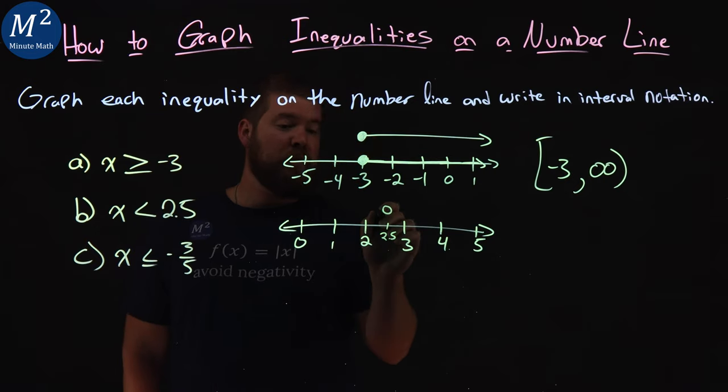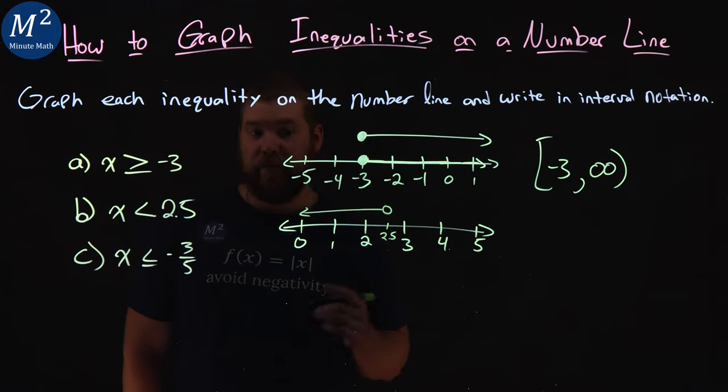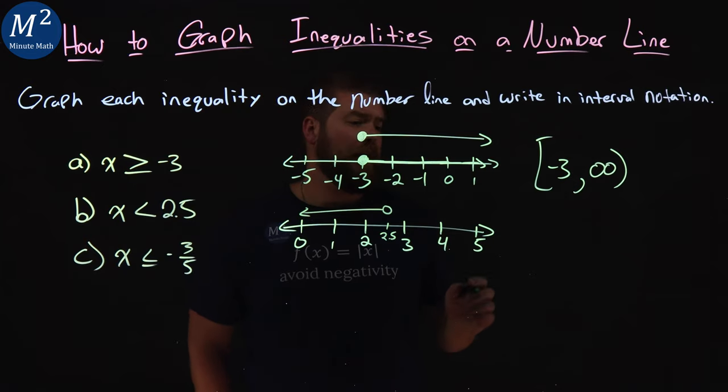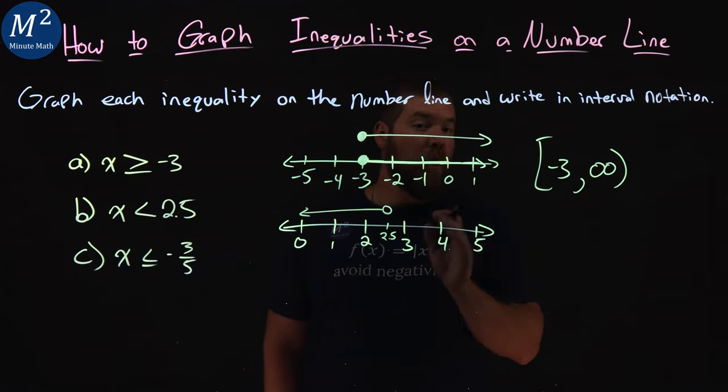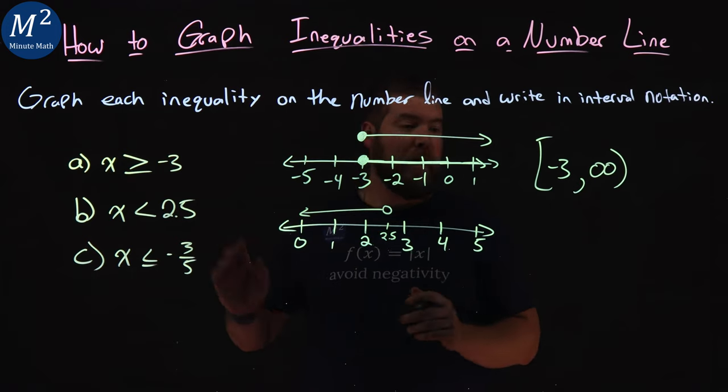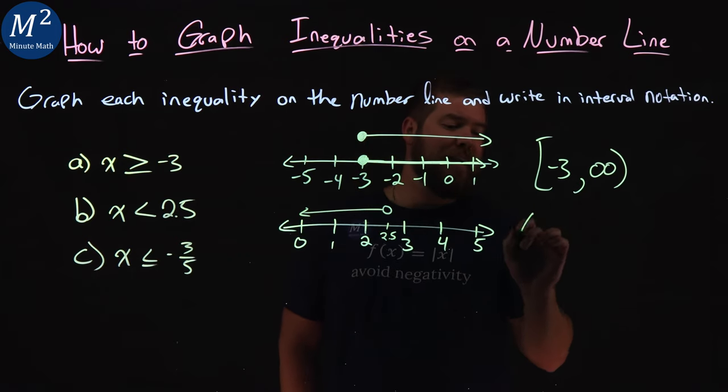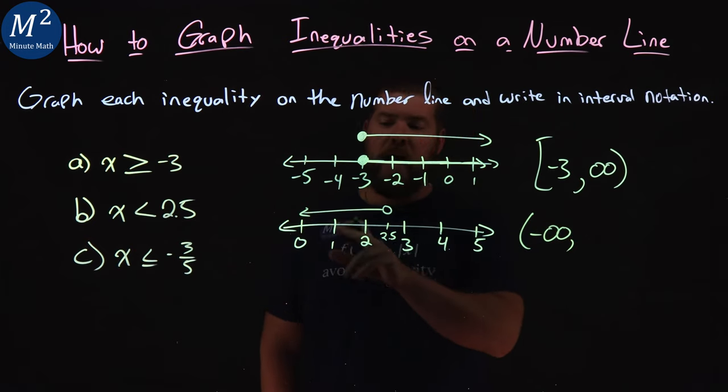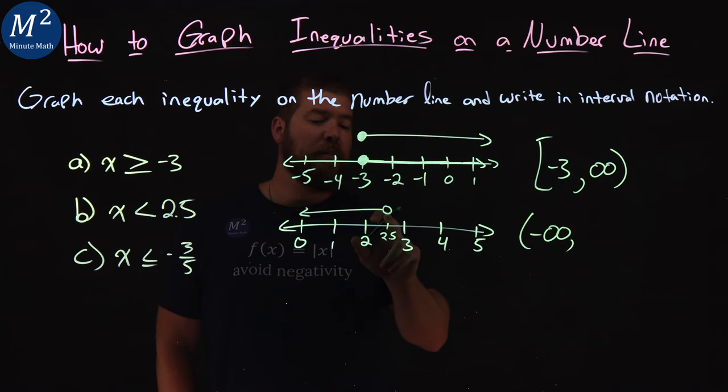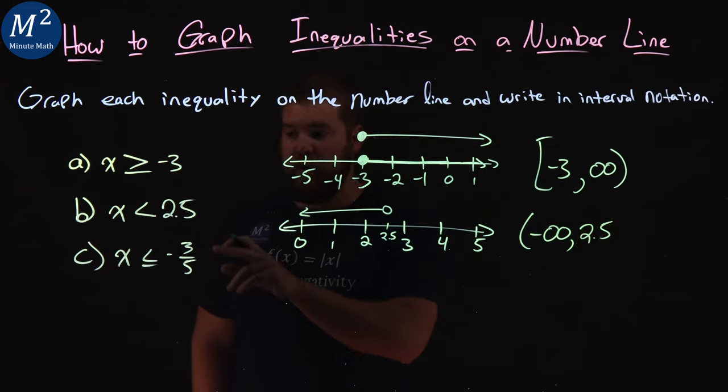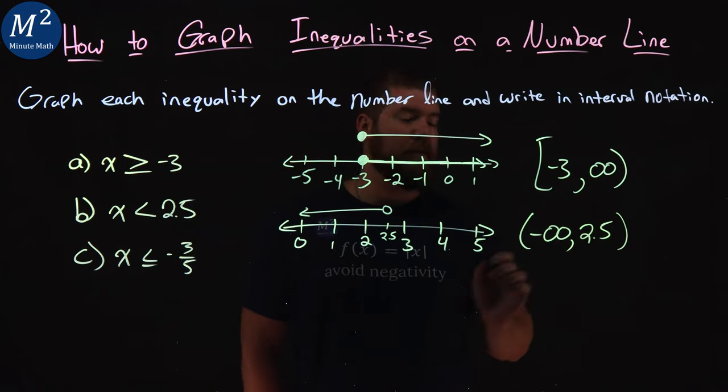Now x is less than, so the arrow goes to the left. So all the values are less than 2.5. So now to write this in interval notation, our lowest bound we're going is from negative infinity, the lowest to the left there. So we have negative infinity, and again whenever you have infinities you need a parenthesis. And we're going up all the way to a positive 2.5, but since we cannot include 2.5 in our value, we'll put a parenthesis there.